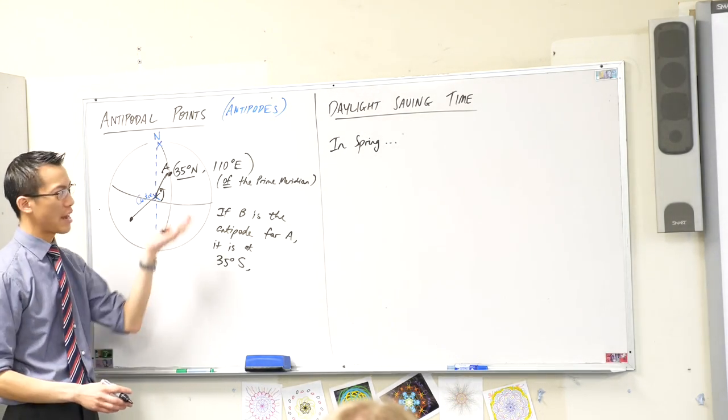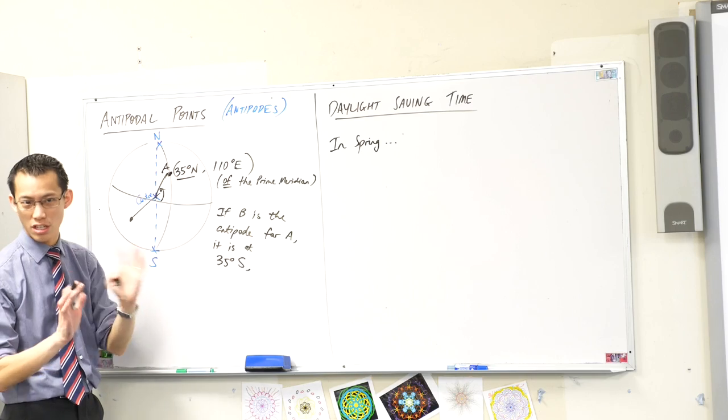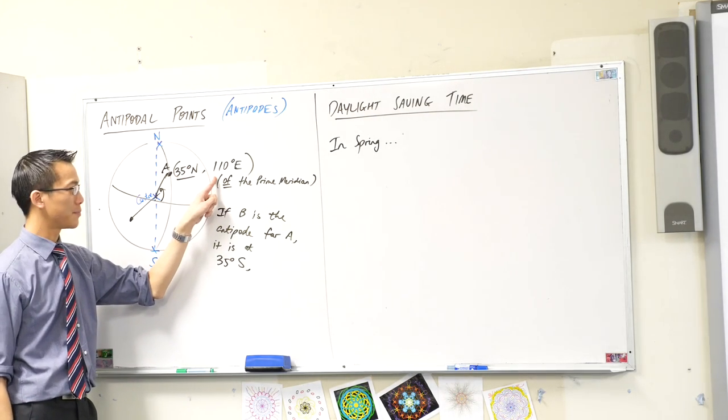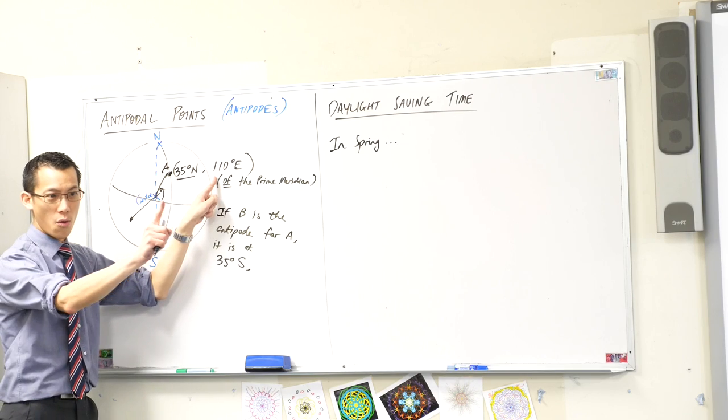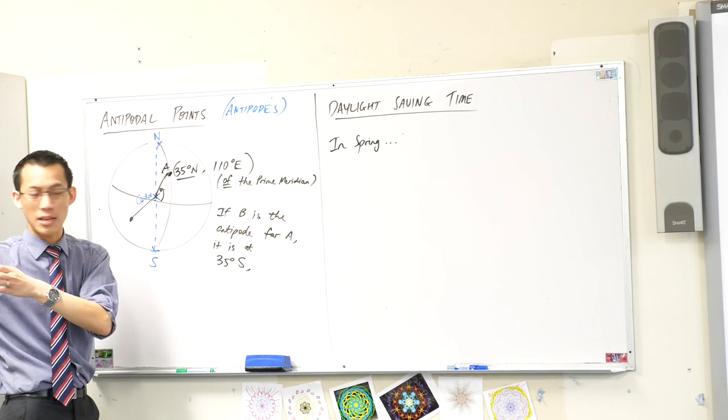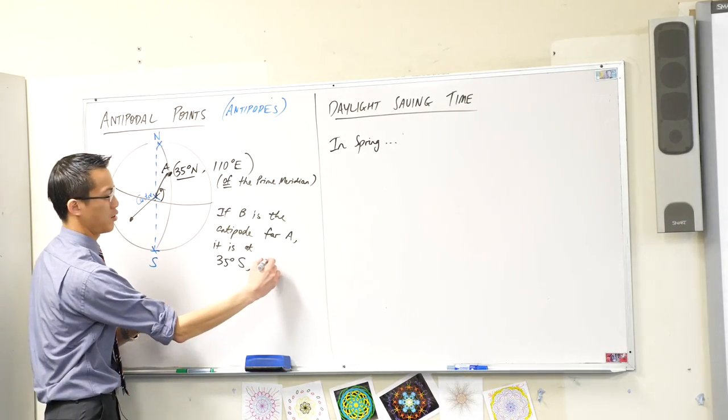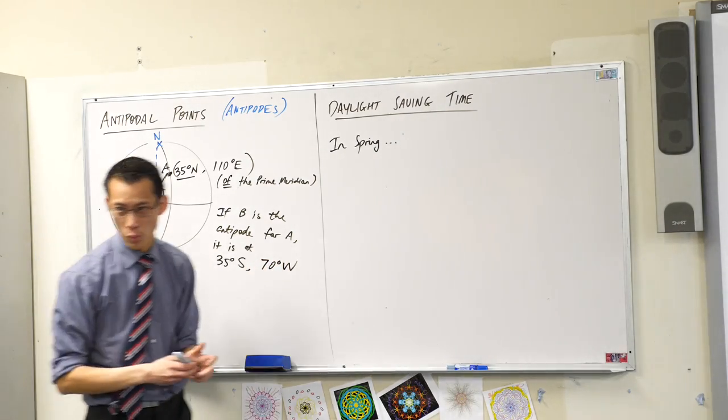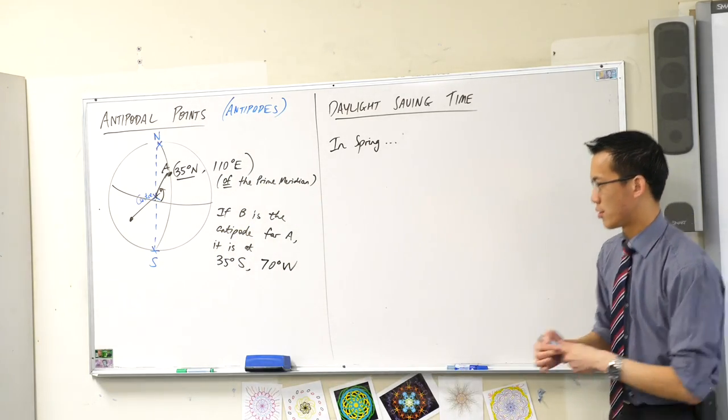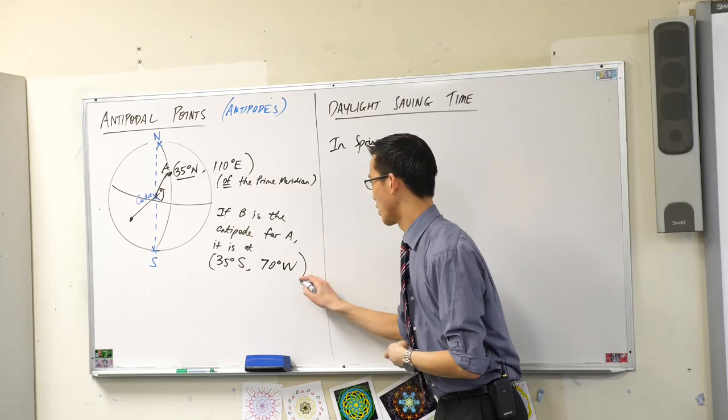So I'm currently 110 degrees east, I'm going to travel west to Greenwich and then further to get to the opposite side of the world, which will give me 70 degrees west, because I traveled west that whole time. Does that make sense? So there we go.